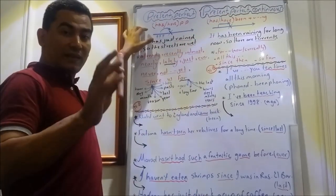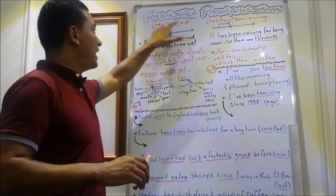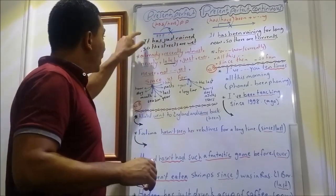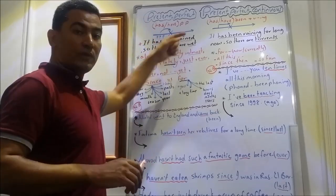Present perfect, the structure of it is has or have plus past participle. On the timeline, we have past, present, future.